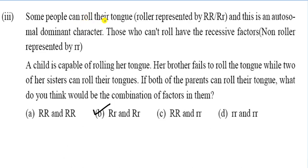Question 3: Some people can roll their tongue. Roll is represented by capital R and non-roll by small r. This is an autosomal dominant character. Those who cannot roll have the recessive factors — non-roller represented by small r. A child is capable of rolling her tongue, her brother fails to roll, and two of her sisters can roll their tongue. If both parents can roll their tongue, the correct answer is B — capital R small r and capital R small r.